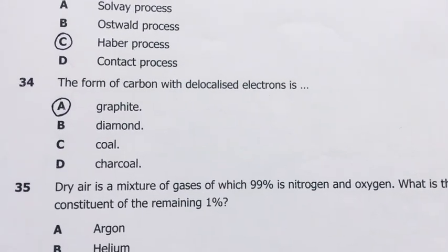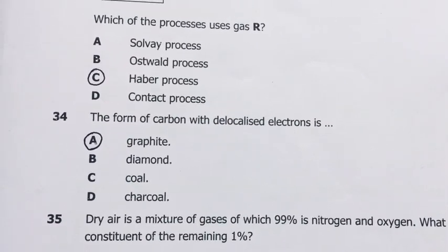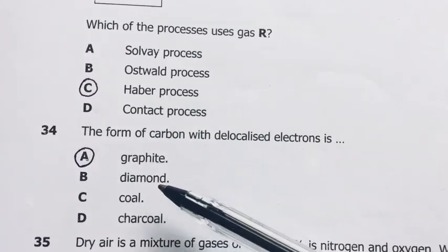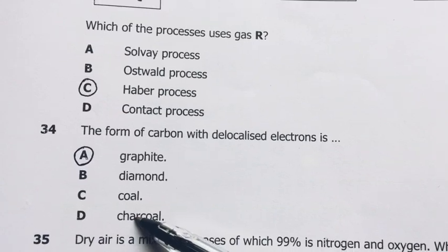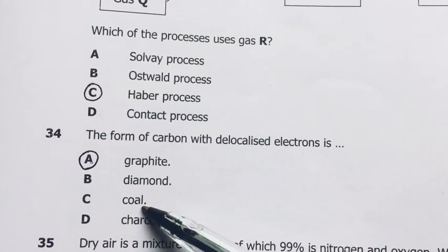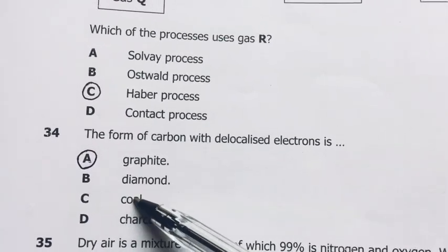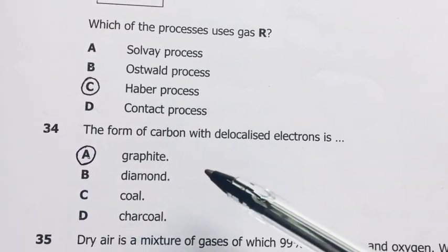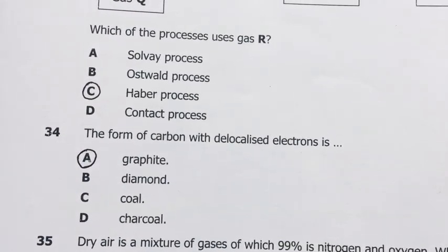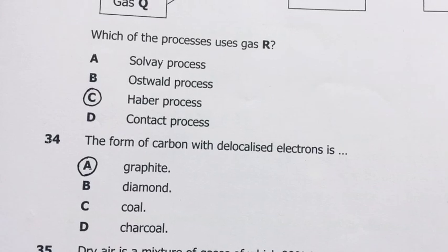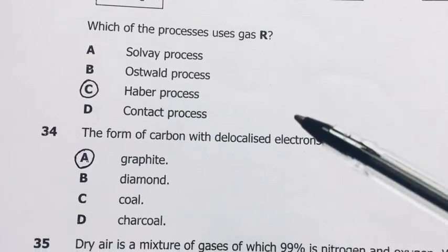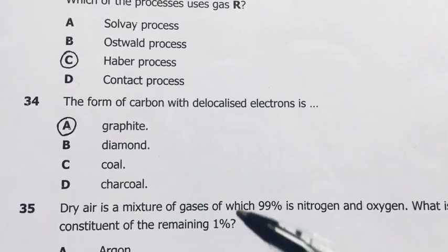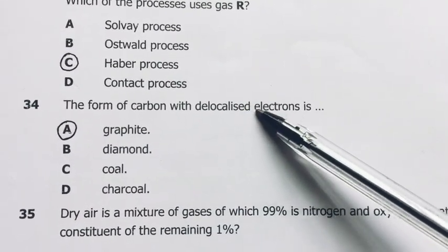Number 34. The form of carbon with delocalized electrons is graphite. Graphite. This is diamond, all the bonds in carbon are utilized in diamond. Coal is almost the same as charcoal. Charcoal is not compressed, coal is compressed. Charcoal is porous. This one is compressed, this one is not compressed, it's highly porous. This is the amorphous form of carbon, where only three of the four valence electrons in carbon are utilized. The fourth one is free, so they are said, or it is said to be delocalized. A is our answer here. And it's capable of conducting electricity because of this property.